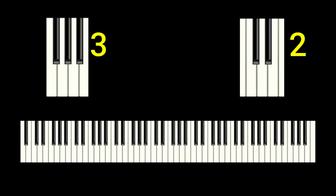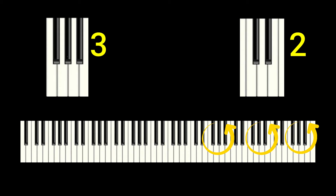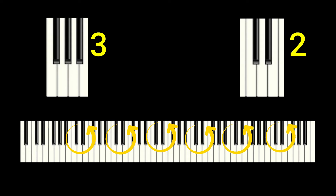If we take a look at the piano keyboard we can see the black notes are grouped together in groups of three and two. This is repeated across the keyboard. Here are the groups of three and here are the groups of two. See if you can find those on your own keyboard.